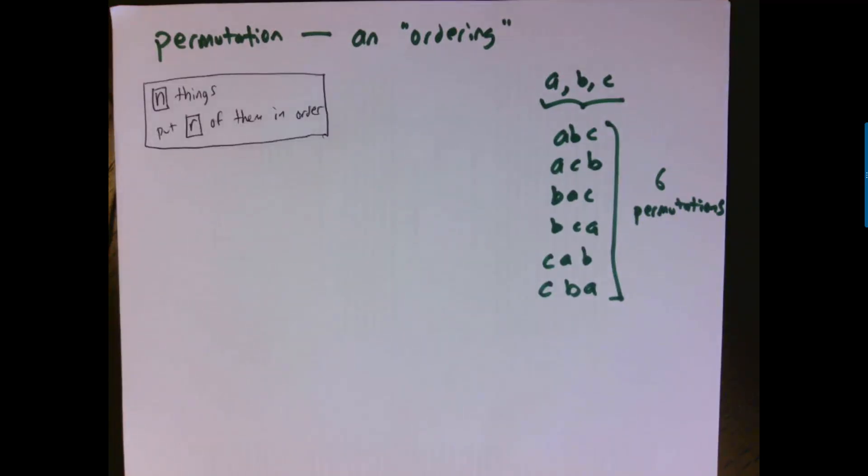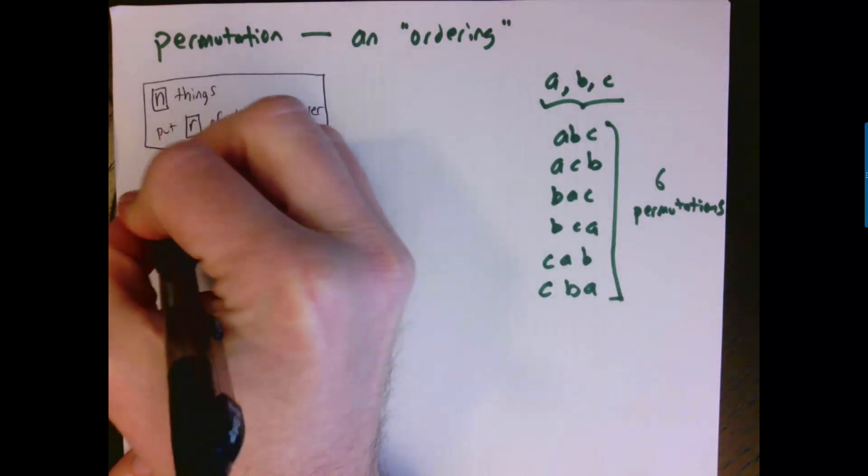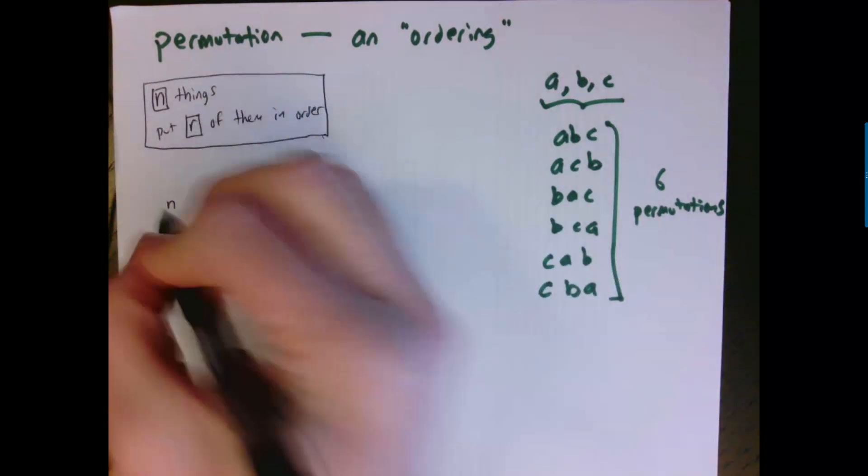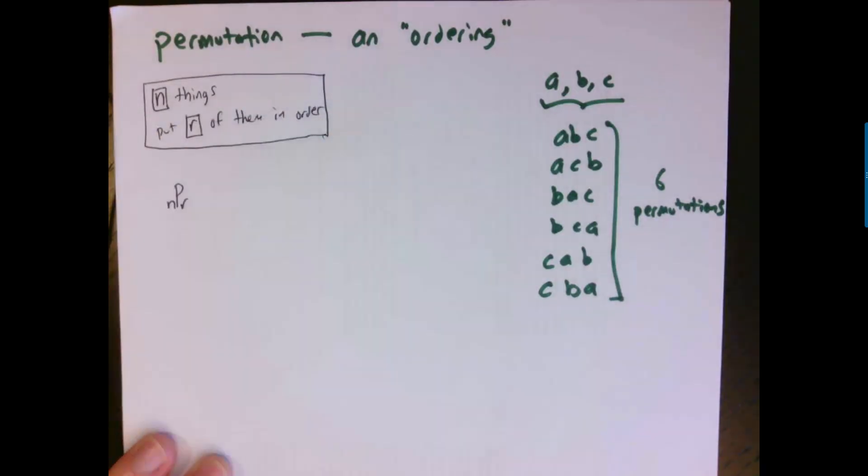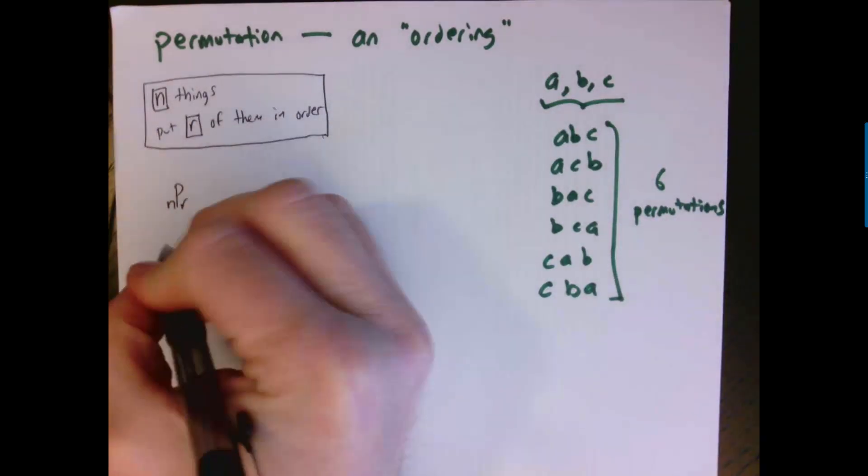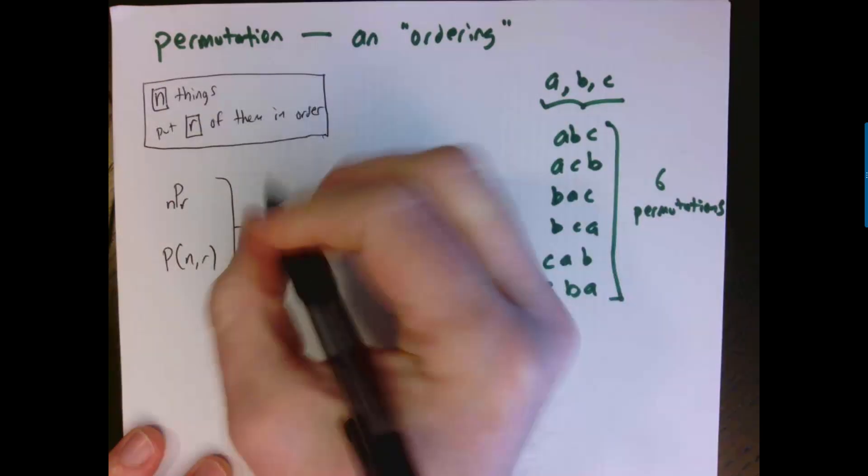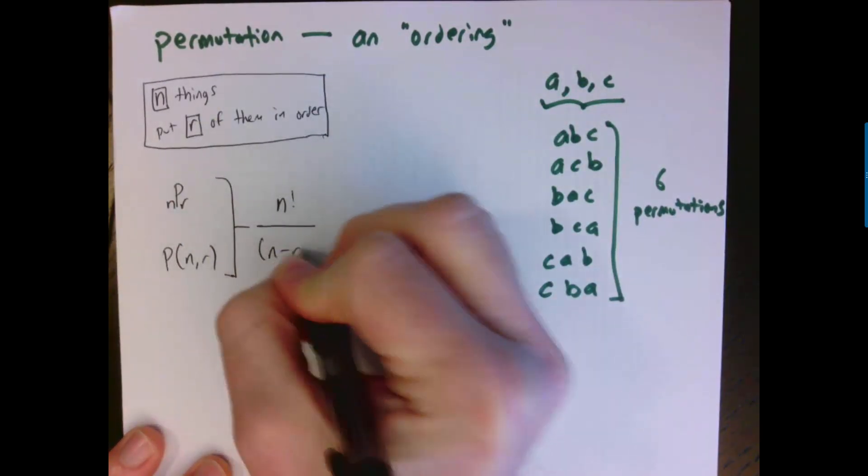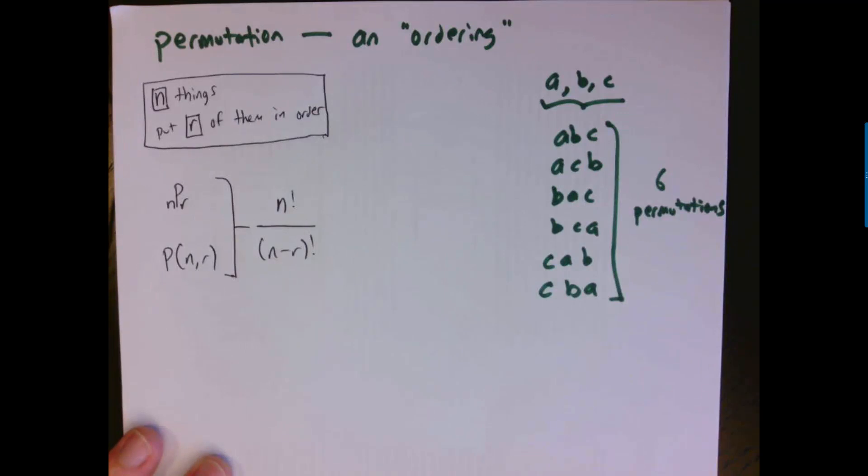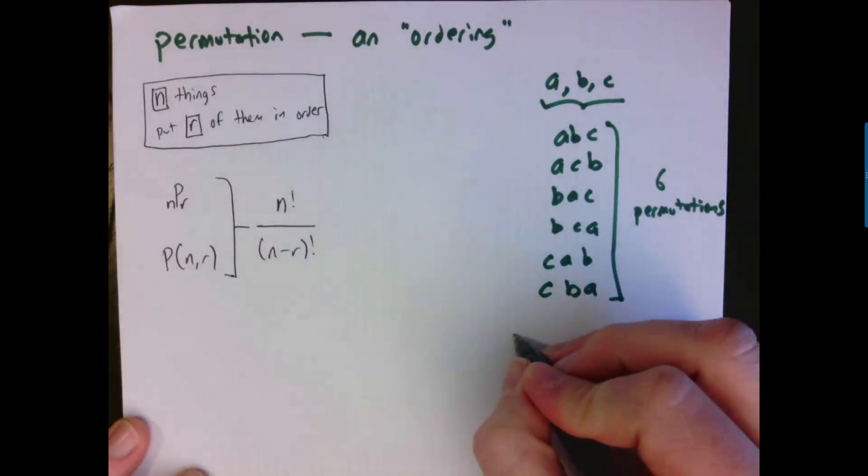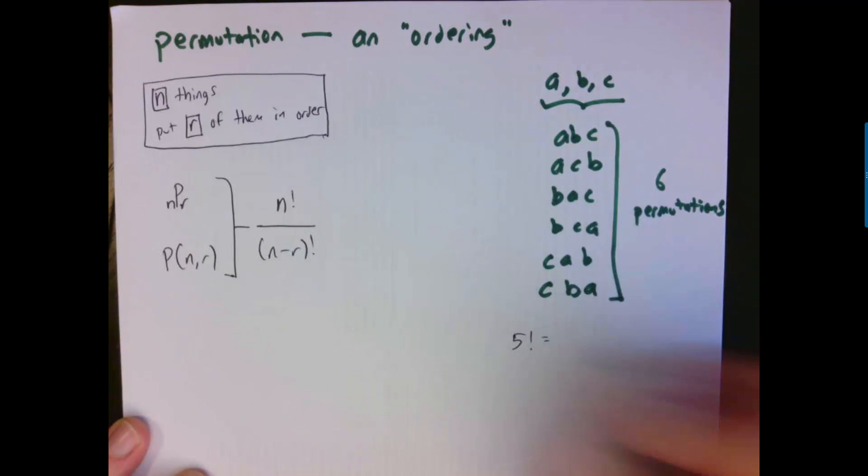Let's say I have n things and I want to choose r of those things and then put them in some kind of ordering. You usually notate that this way - nPr - the p stands for permutation. You also see it sometimes notated other ways. The way that you actually calculate how many ways there are to do that is with this equation: n factorial divided by n minus r factorial. If you don't know what factorial is, let me give you an example. 5 factorial is 5 times 4 times 3 times 2 times 1.